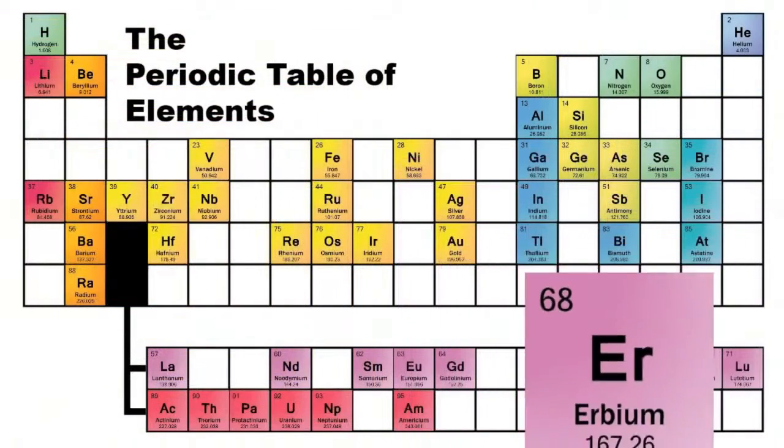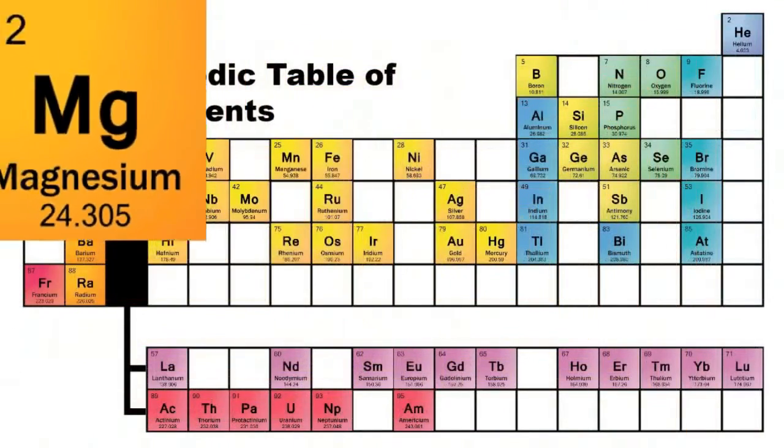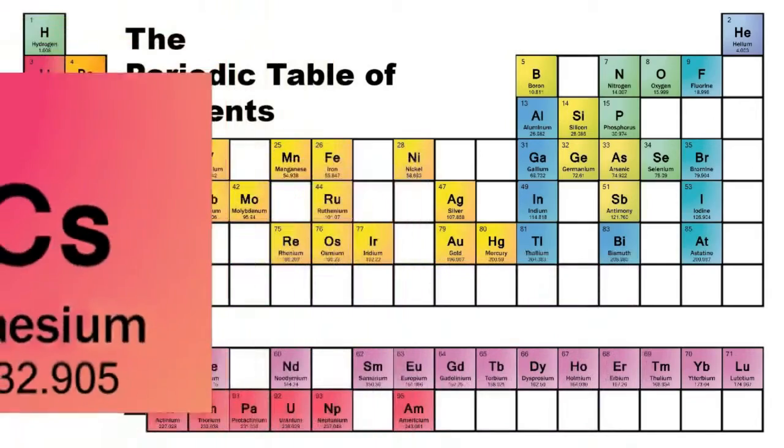There's holmium, and helium, and hafnium, and erbium, and phosphorus, and francium, and fluorine, and terbium, and manganese, and mercury, and molybdenum, magnesium, dysprosium, and scandium, and cerium, and cesium, and lead,